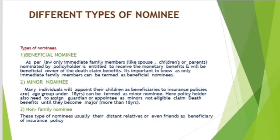Minor nominee. Many individuals appoint their children as beneficiaries to their insurance policies. A child whose age is less than 18 years can be termed as a minor nominee. The policyholder also needs to assign a guardian or appointee, because minors are not eligible to claim the death benefits until they become major.